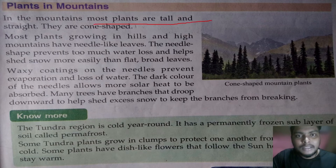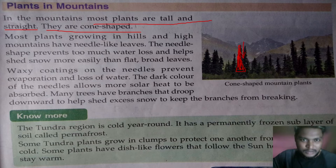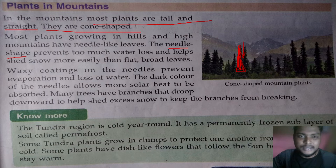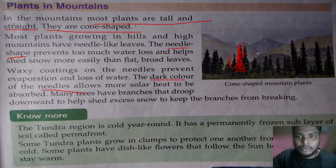In mountains, most plants are tall and straight with a cone shape. This shape helps snow slide off the plant. They also have needle-shaped leaves, which reduce transpiration. The leaves are dark colored because in mountain regions the temperature is low, and the dark color helps absorb sunlight and heat, which keeps the plant warm and supports photosynthesis.